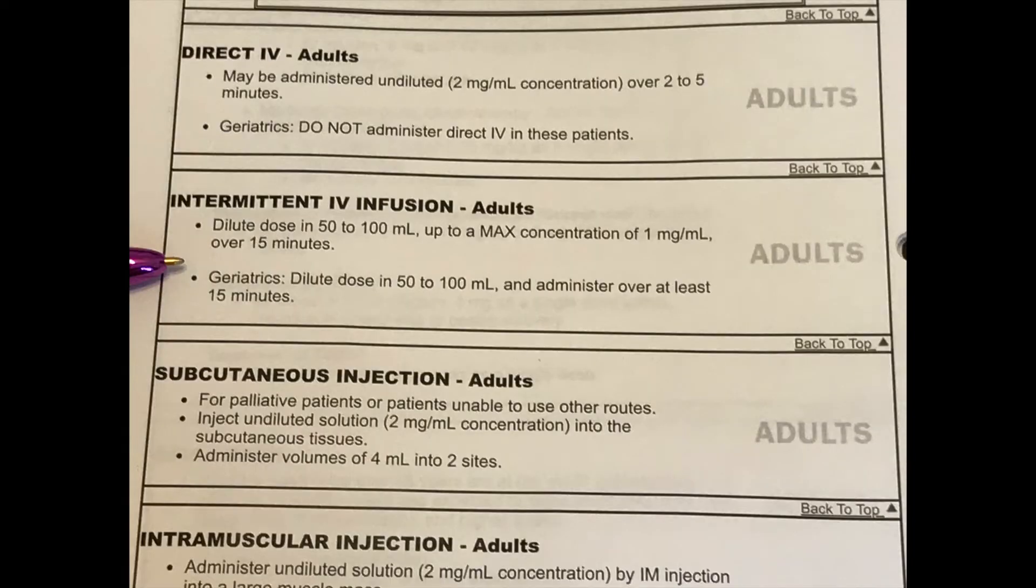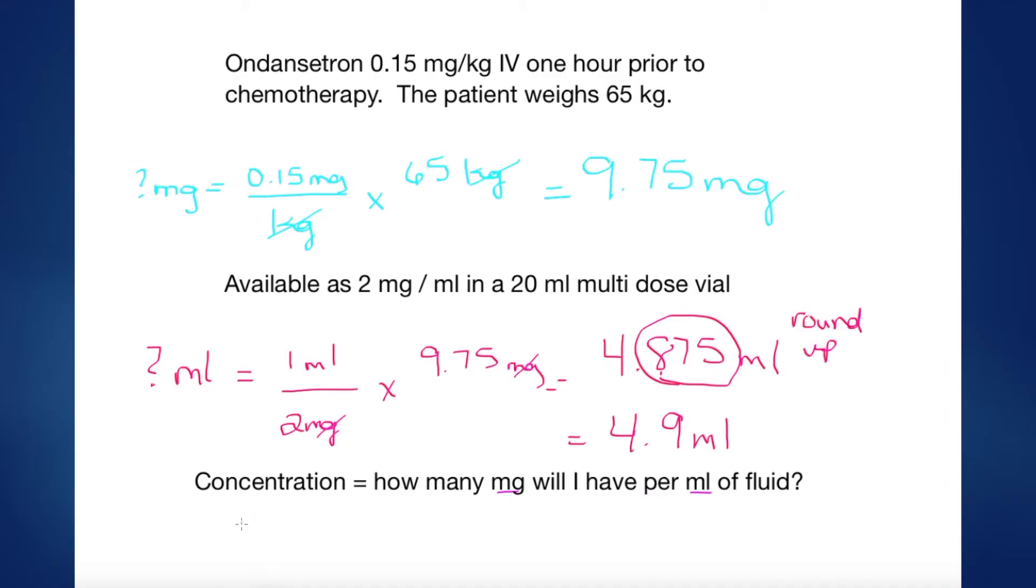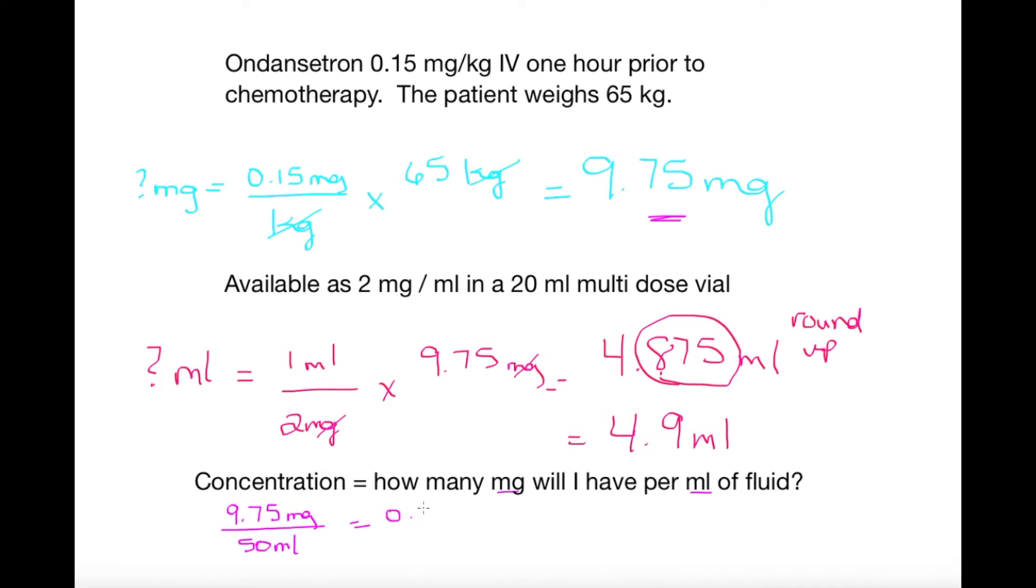So we're not quite done our math yet. I see I need to dilute this dose into 50 to 100 mls of diluent but I need a max concentration of 1 milligram per ml. So I need to make sure that if I pick a 50 ml bag or a 100 ml bag I have the correct concentration. So we'll do the math here for a 50 ml bag first. Completing this calculation I see that I actually have 0.195 milligrams per ml which is well within my safe dose.